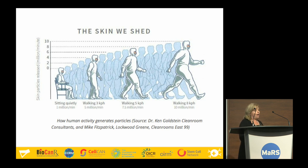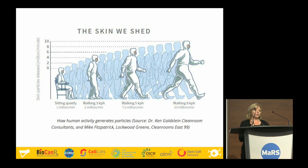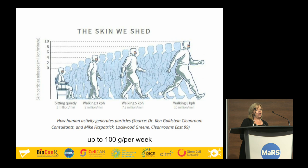Consider these particle shedding numbers: sitting quietly, you are shedding one million particles per minute; walking slowly, five million; a little faster, 7.5 million; walking normally, ten million. We also shed up to 100 grams of skin particles per week. That's why we have to wear bunny suits and keep all those particles contained so they are not floating around in our clean rooms.